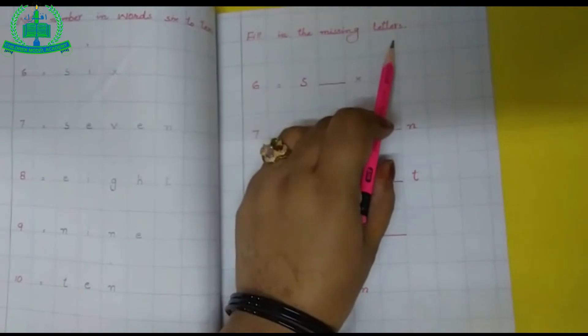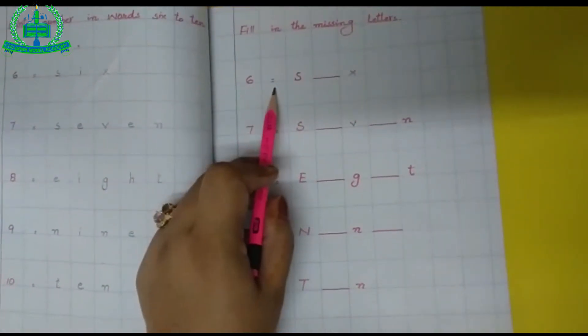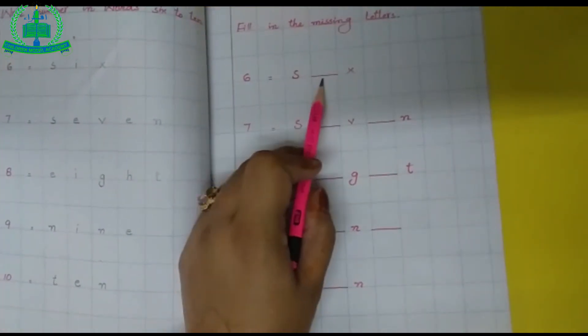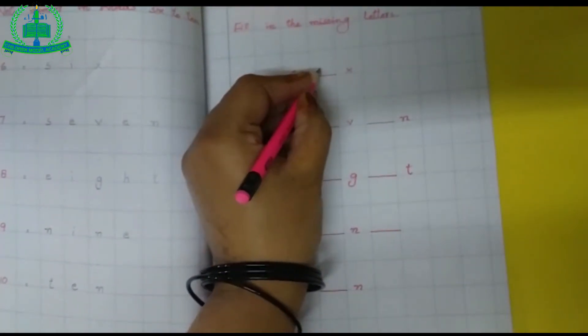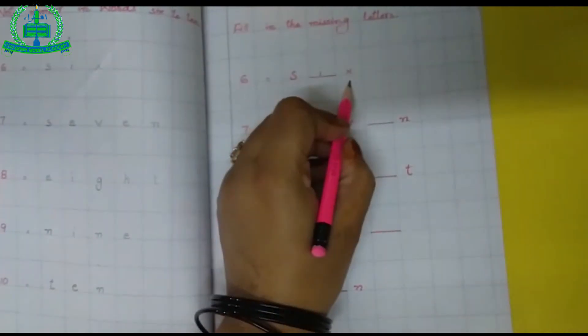Fill in the missing letters. Six is equal to S blank X. S-I-X. Six.